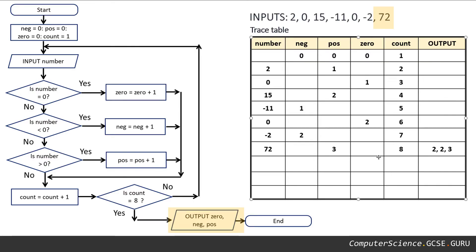Now a few things to look out for. First of all, there are some empty rows on this trace table. That's not unheard of to have empty rows. Don't panic on the exam question if you've got empty rows there. I would be concerned if you need extra rows, but don't be worried if you have surplus rows that you don't need.